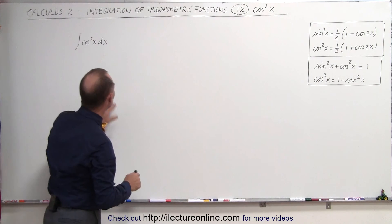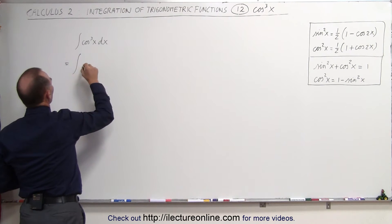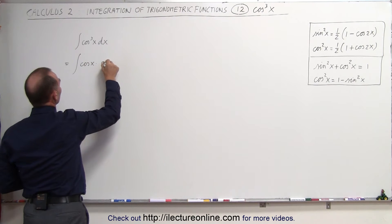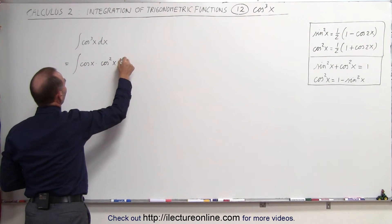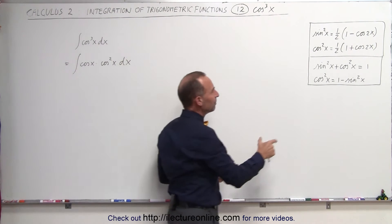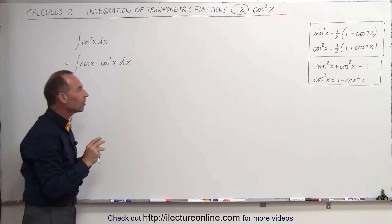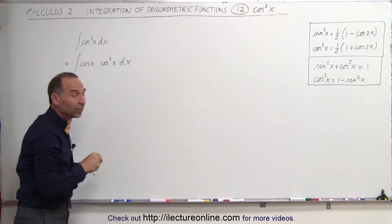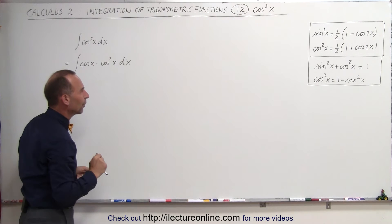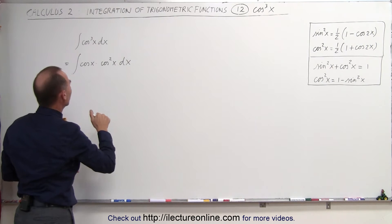The reason I did that is because we can take this integral and rewrite it as the integral of the cosine of x times the cosine square of x times dx. I can then take the cosine square of x and replace it with 1 minus the sine square of x, because sometimes one of the functions — the cosine — can become the differential of the sine, or the sine can become the differential of the cosine. So we're going to replace the cosine square of x by 1 minus the sine square of x.